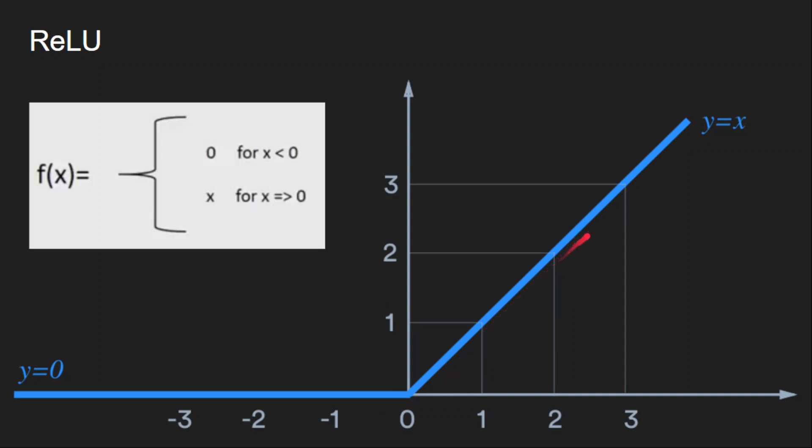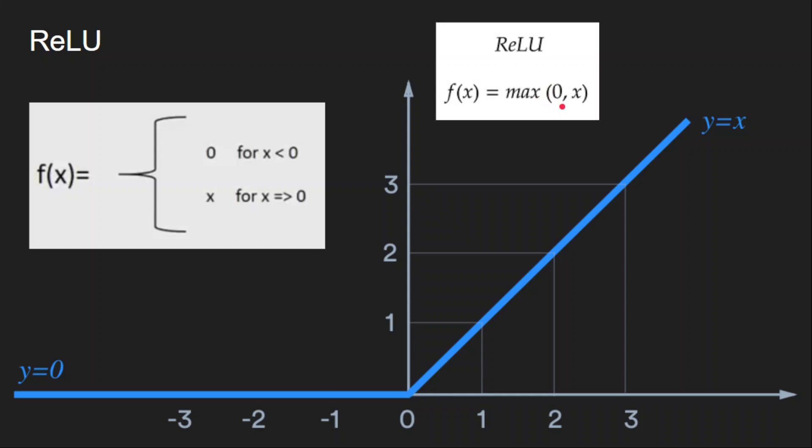Well, the function is linear for the values greater than zero, but it is non-linear for the negative values because it always outputs zero. As it is linear for half of the input and non-linear for the other half, it is sometimes referred as piecewise linear function.